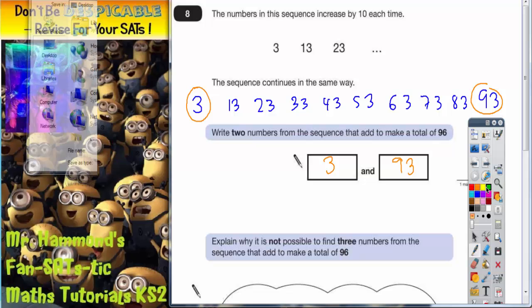However, if you move to the next number in from the start of the sequence and the next number down from the end of the sequence, you'll notice that 13 and 83 also makes 96. So you could have 13 and 83. You could move to the next number in from the start and the next number down from the end: 23 and 73.